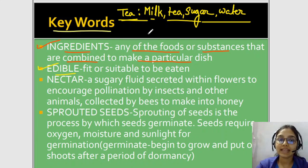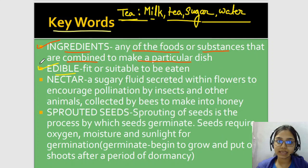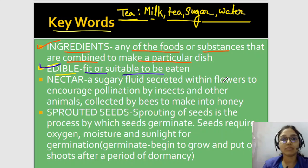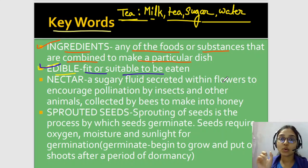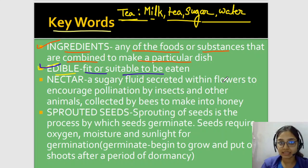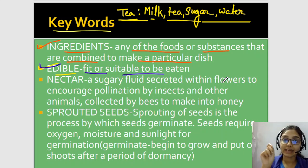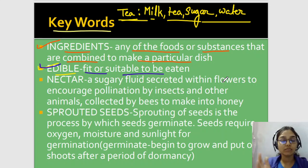Now let's talk about the word 'edible.' What does edible mean? Edible means fit or suitable to be eaten — what you can eat. An easy way to remember: 'edible' relates to 'eat.' For example, coconut oil — if you look at the bottle of coconut oil, it will say whether it is edible or not. If it says edible, that means you can use that coconut oil in cooking.